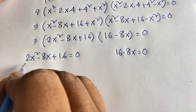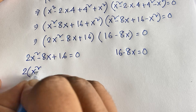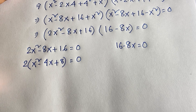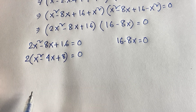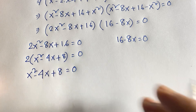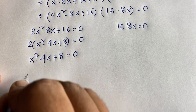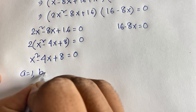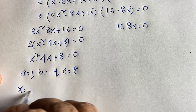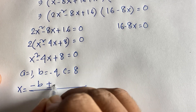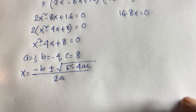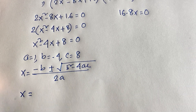For Case 1, dividing by 2: x squared minus 4x plus 8 equals 0. Here a equals 1, b equals minus 4, and c equals 8. Applying the quadratic formula: x equals minus b plus or minus square root of (b squared minus 4ac), all over 2a.